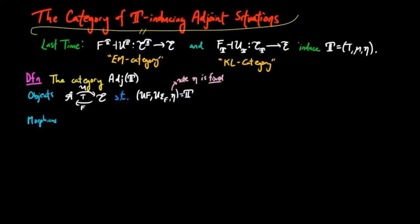Morphisms in this category are those functors K between the domain categories such that they respect the structure of the adjoint situation. In other words, we have KF equals F prime and U prime K equals U. Then since the composition of functors is associative and the identity functors act as identity morphisms of this category, the category of T-inducing adjoint situations is a well-defined category.